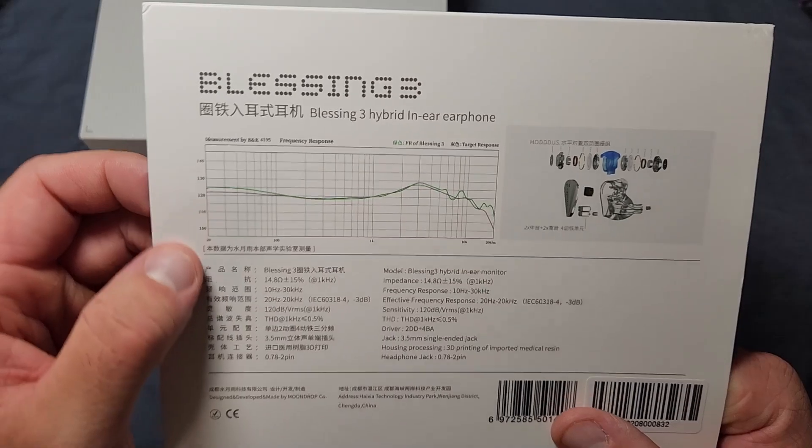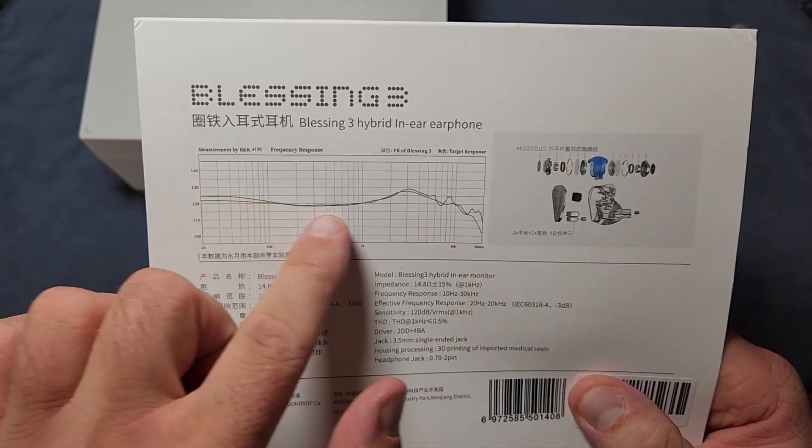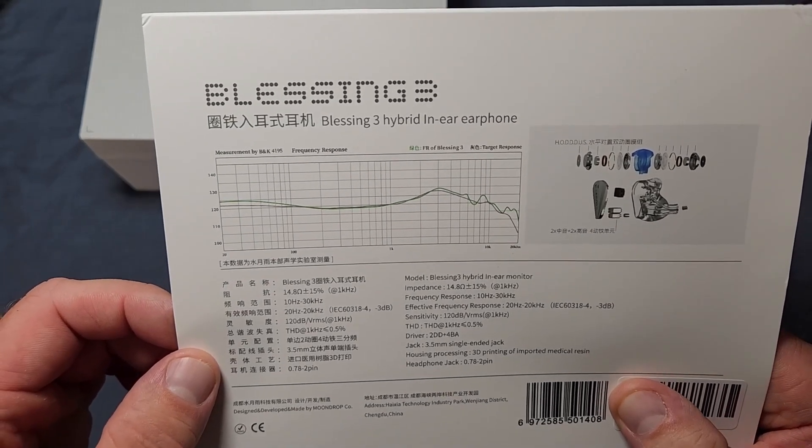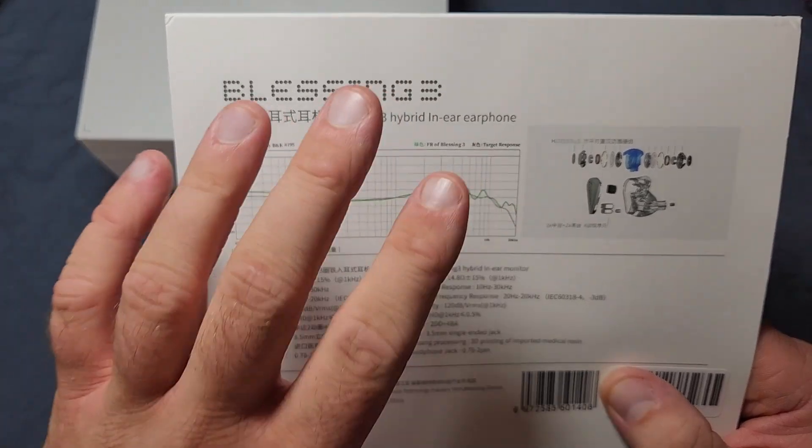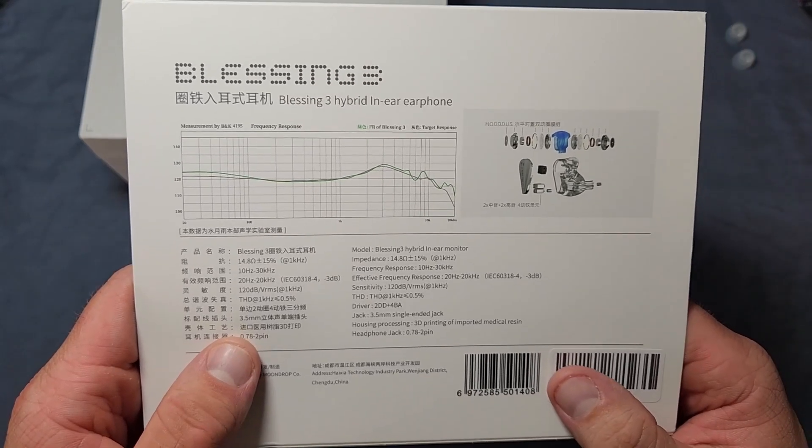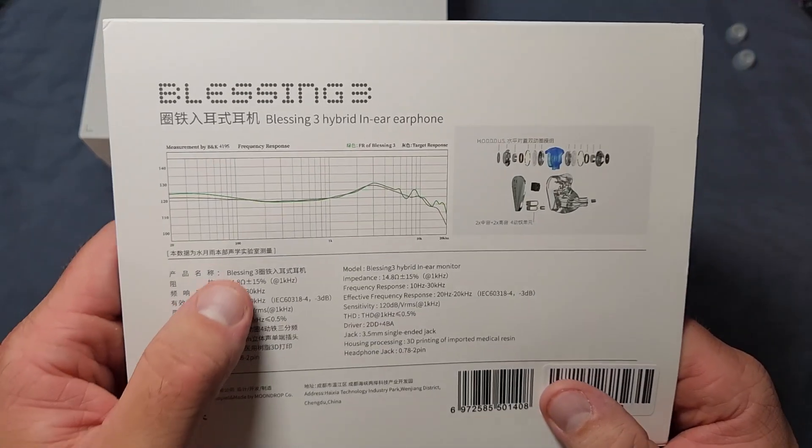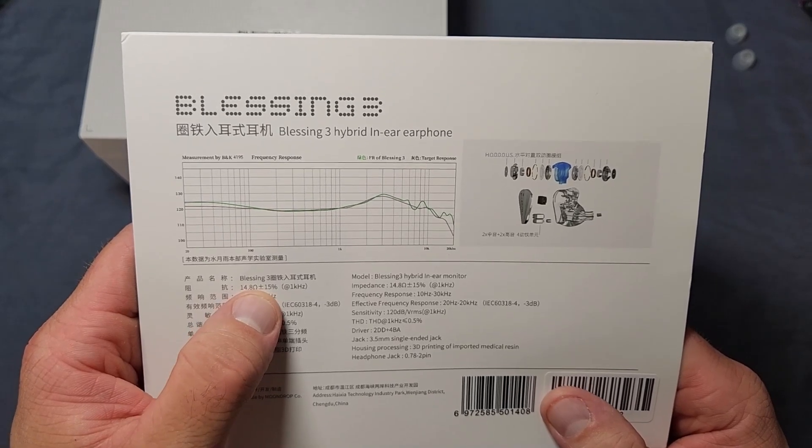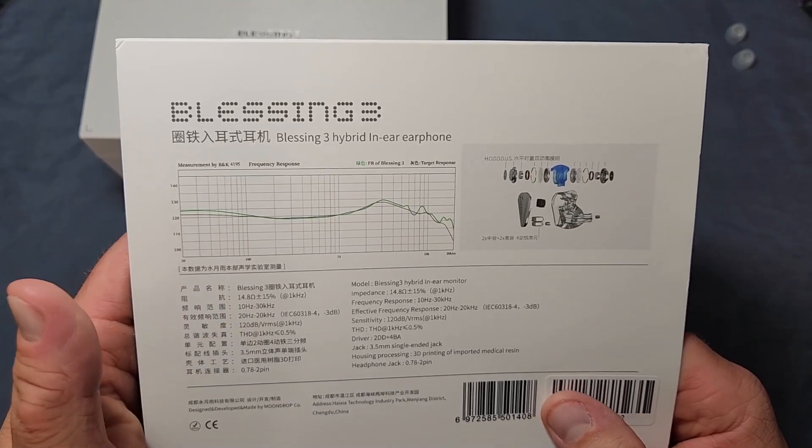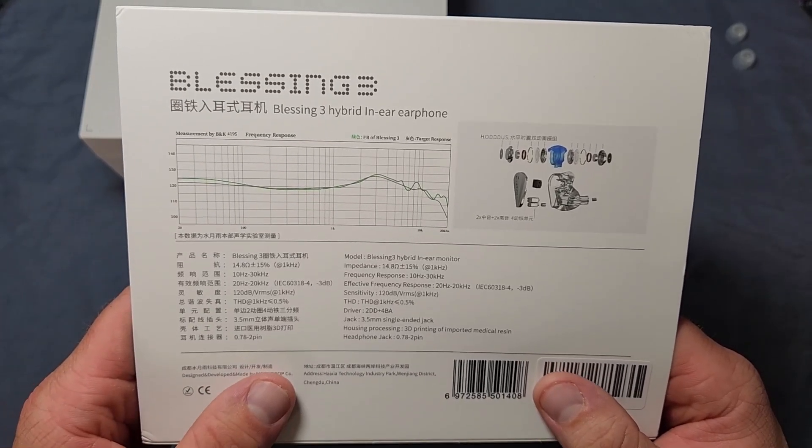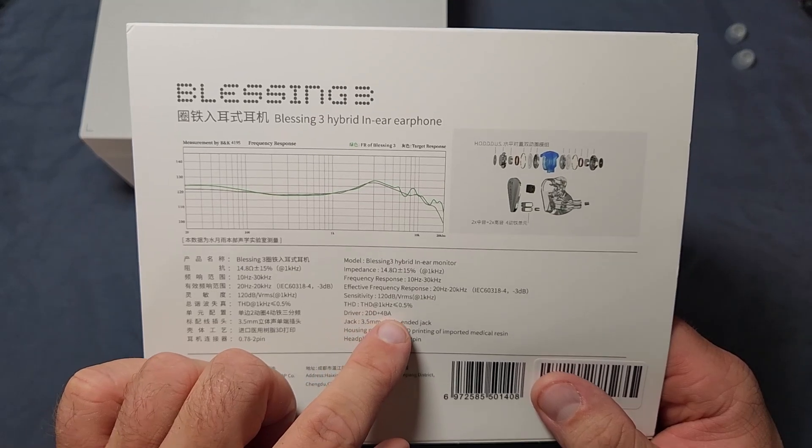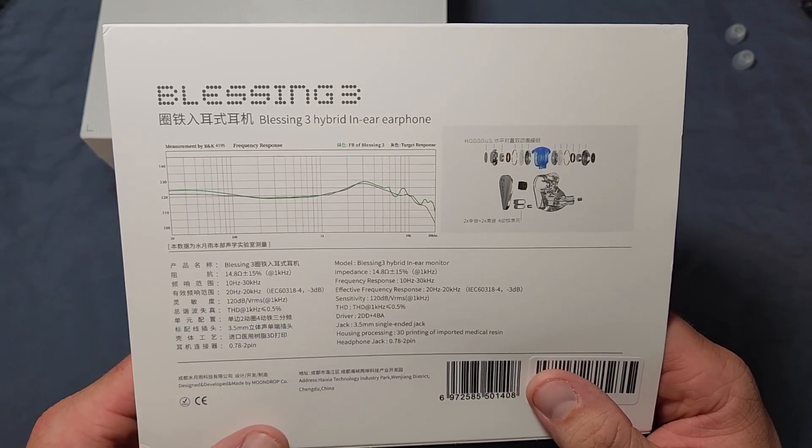So we see a frequency response graph which is targeted at like Moondrop's in-house target there. Just a little bit of a bass shelf according to this and follows their target curve pretty close until you get up here into the 6 to 8k range right around in there and then some weirdness happens and that does have some sonic effects which I will talk about when we get to sound. Otherwise, we see the other important info here like 14.8 ohm impedance with a 120 decibel per volt sensitivity. So pretty easy driving. And then we have the driver complement.